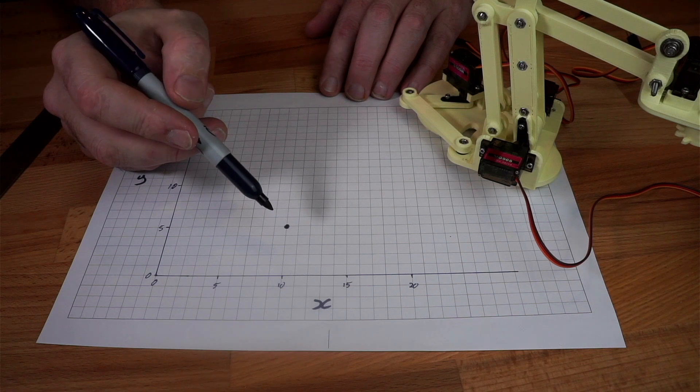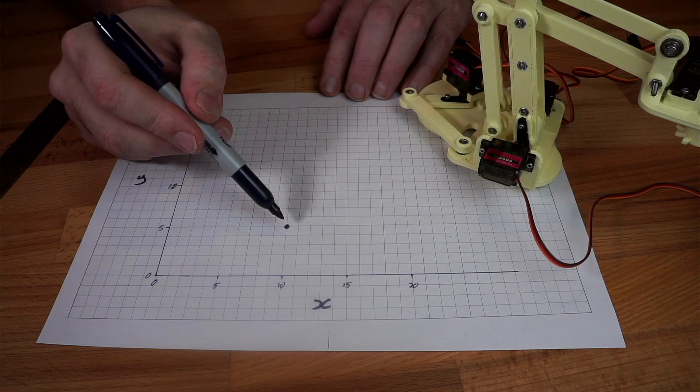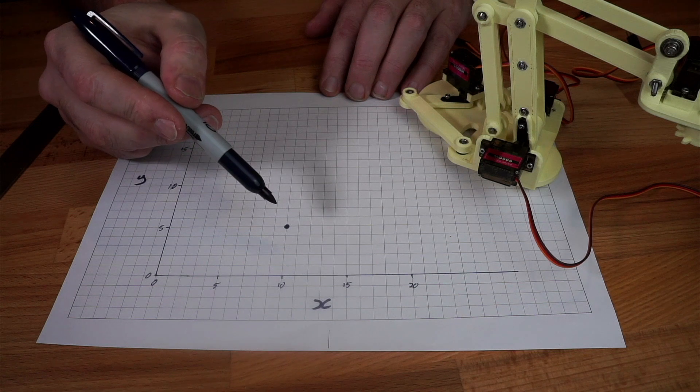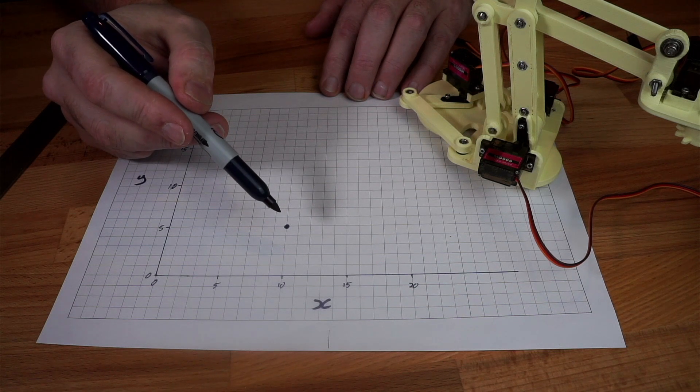Let's say we have a point here at x equals 10 and y equals 5. We can then raise it up in the air slightly so let's say that z equals 5 here as well. This is the point that we want to move our robot to.